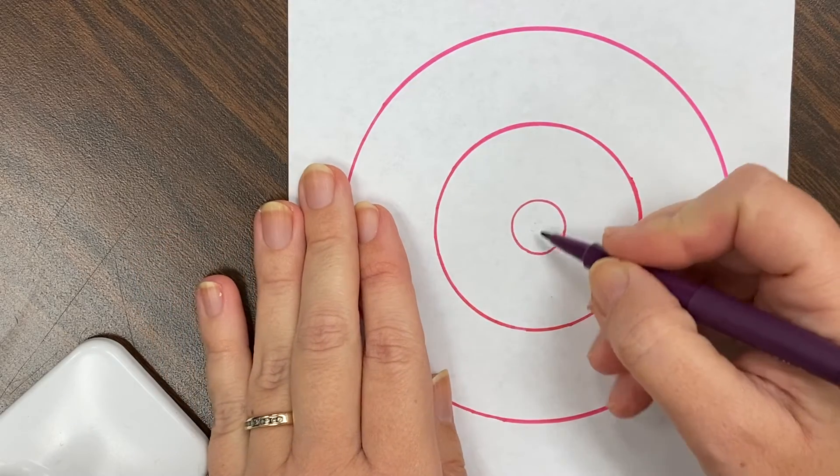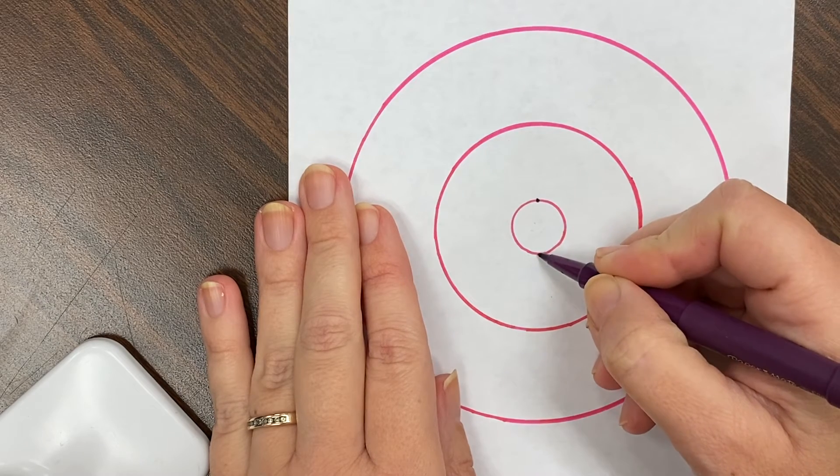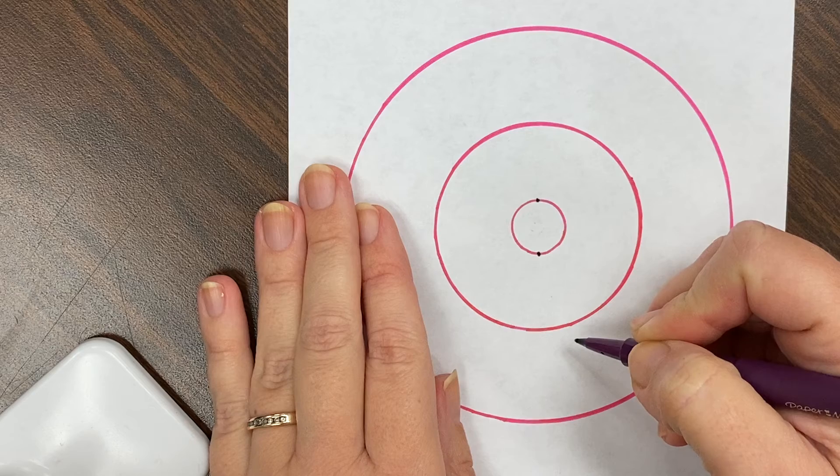So I'm going to find the very tip top, I'm going to put a little dot. Directly across from that, at the tip bottom, I'm putting a little dot.